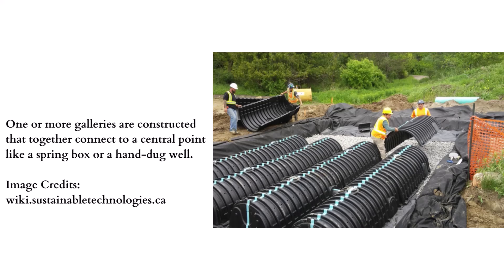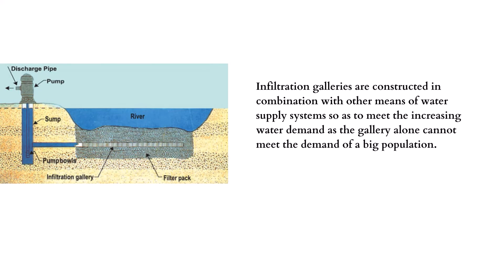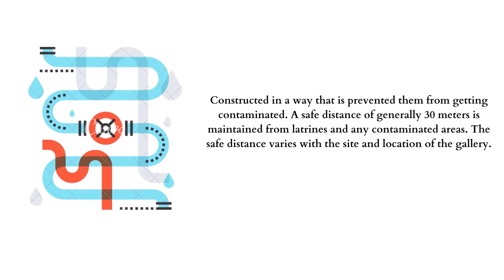One or more galleries can be constructed together and connected to a central point like a spring box or a hand-dug well to achieve a higher yield. Infiltration galleries are also constructed in combination with other water supply systems to meet increasing water demand, since a single gallery cannot serve a larger population. They are constructed in a way that prevents contamination, maintaining a safe distance of generally 30 meters from latrines and any contaminated areas.